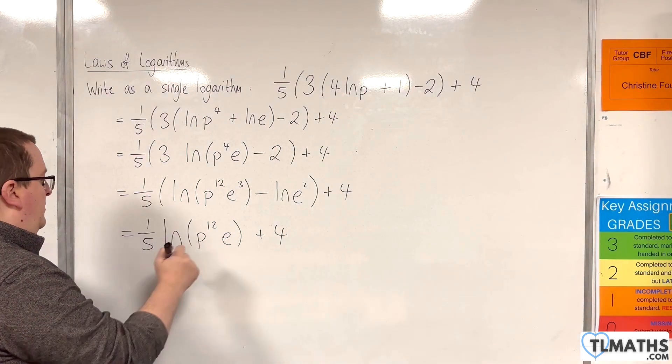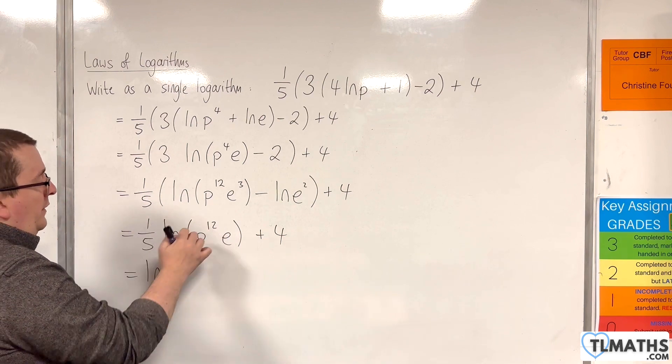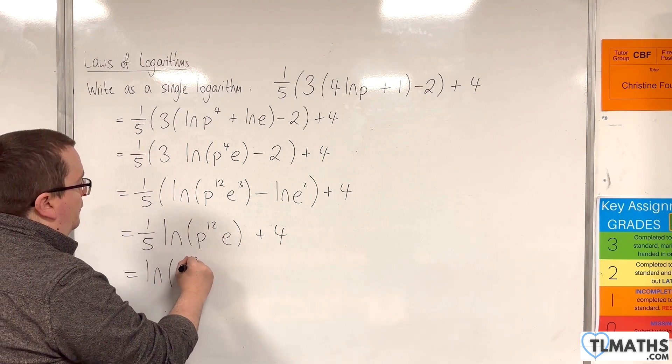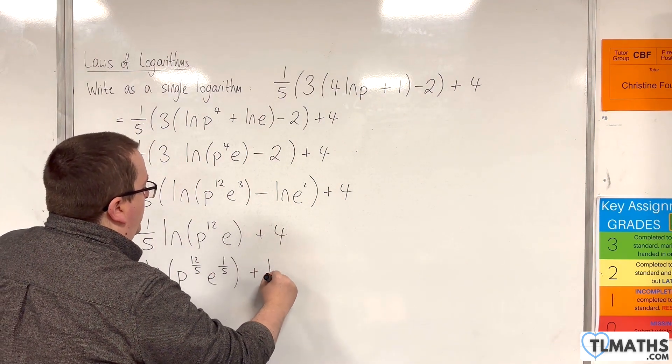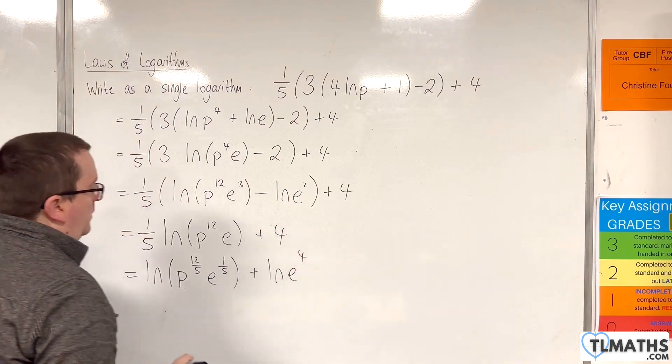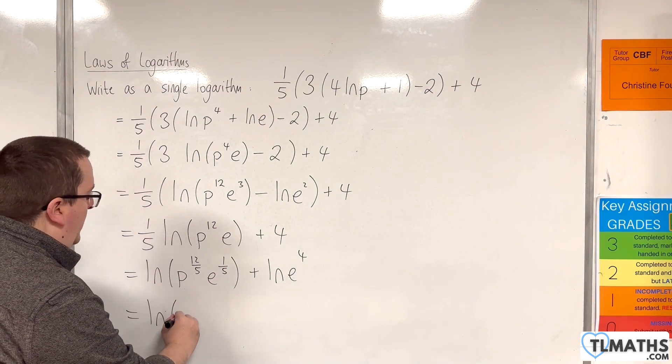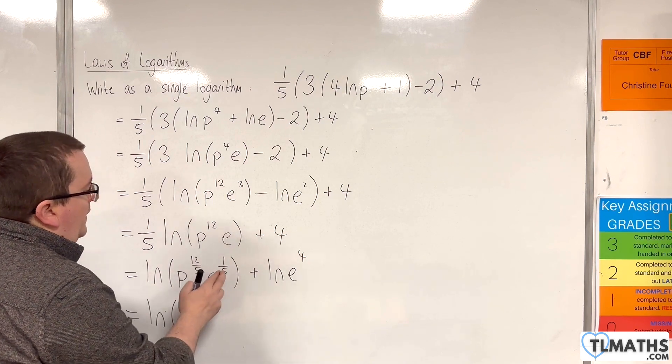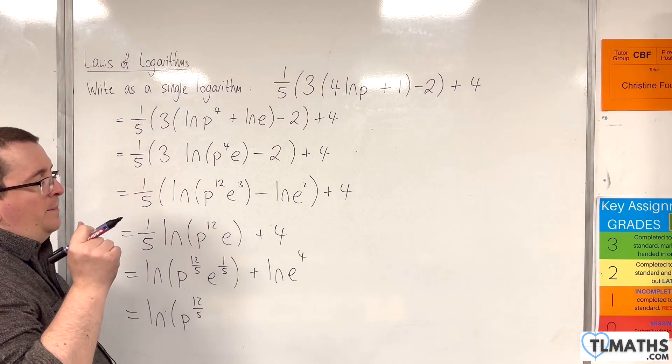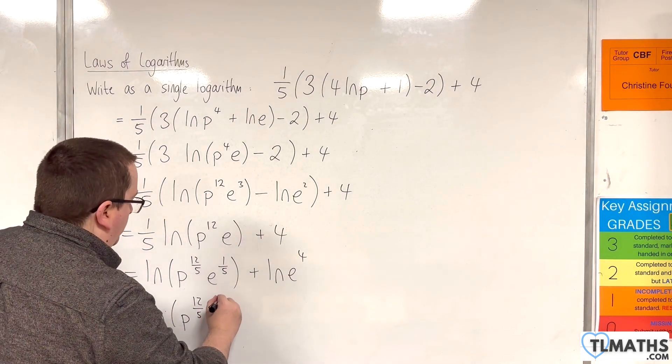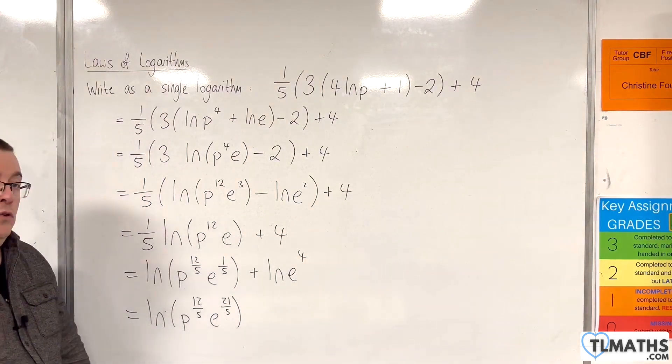Bring the 1/5 up to the power. So the natural log of - now the 1/5 will affect both of these. So we'll have p to the 12/5, e to the 1/5. And the 4 I can write as the natural log of e to the 4. So this will be the natural log of p to the 12/5. Then I'll have e to the 1/5 times e to the 4. So that would be e to the power of 21/5. And now we've written it as a single logarithm.